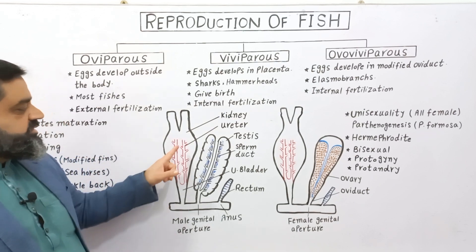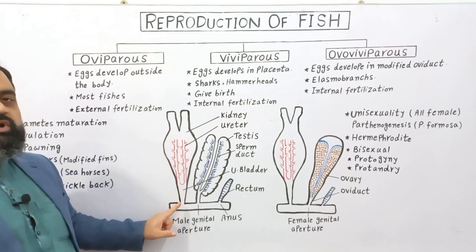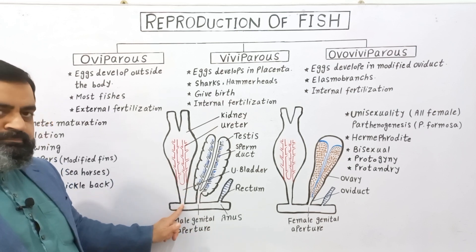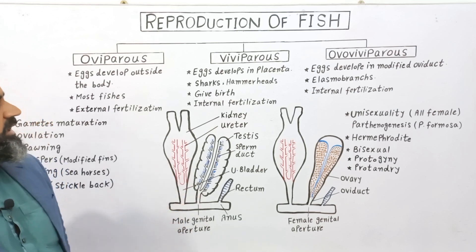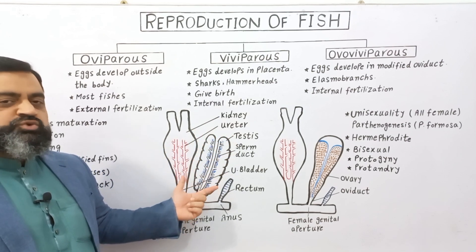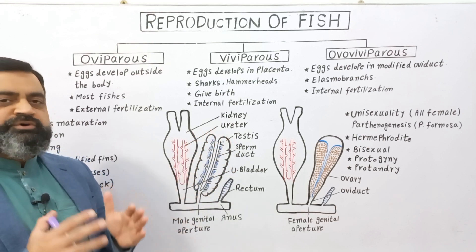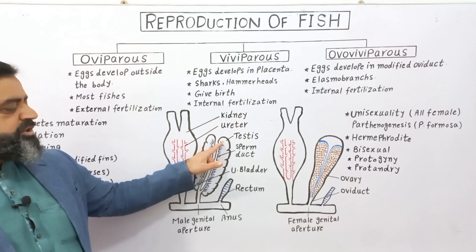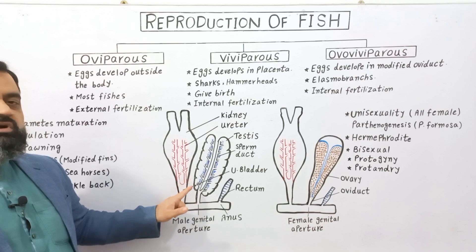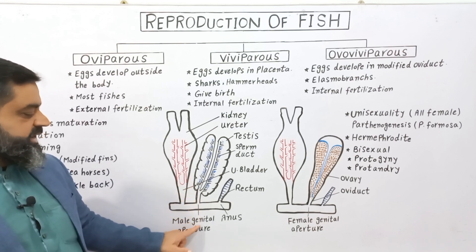The kidney filters the blood and produces urine, which is transported through the ureter into the cloaca or outside the body through the urinogenital pore. Alongside the kidney there are reproductive organs known as gonads. The male has testes which produce sperms. Sperms are transported through sperm ducts and released into the water or transferred into the body of the female fish through the male genital aperture.